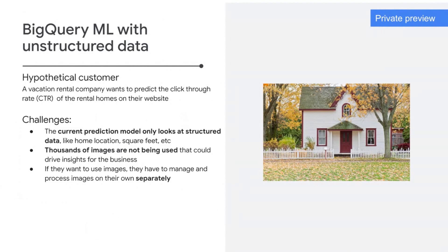Imagine a vacation rental company that wants to predict the click-through rate of rental homes on their website. Their current machine learning model only looks at structured data — think the size of homes, number of rooms, location of the rental properties. They also have thousands of images of homes not being used in their model training at all. If they want to apply machine learning to those images today, that might be a completely different flow for their data scientists as opposed to where they're doing their modeling of structured data.